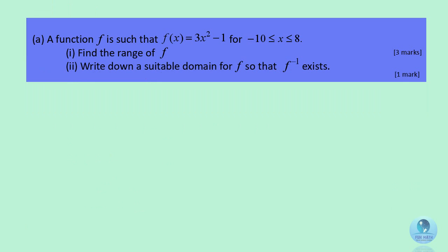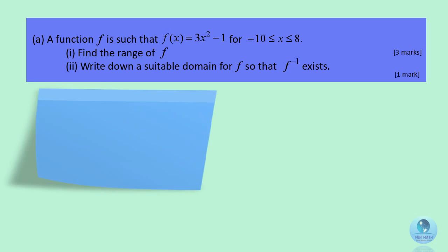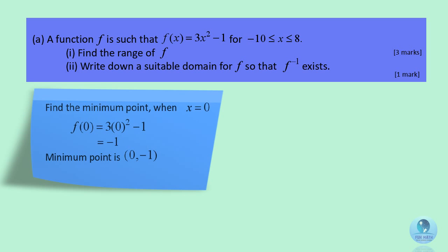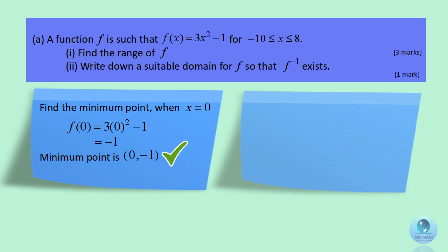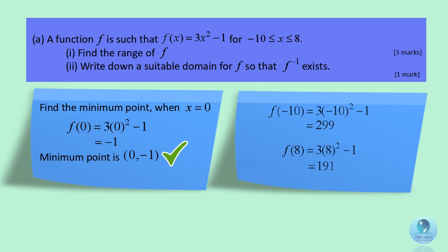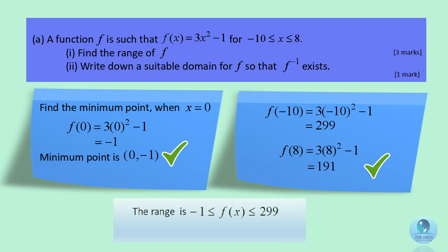To find the range for function f, as it is a quadratic equation, we have to find the minimum point, which is (0, negative 1). At the same time, find the image of the maximum and minimum values from the given domain. Therefore, the range for function f is greater or equal to negative 1 but lesser or equal to 299.